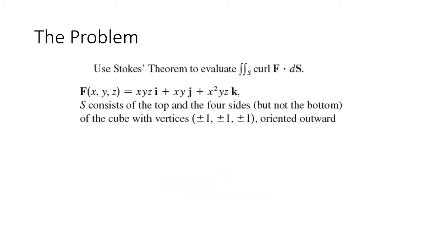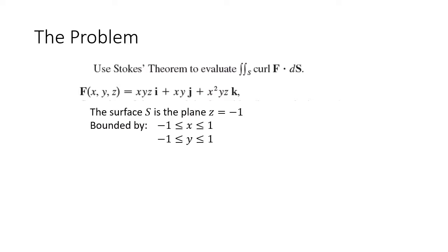So we started with Stokes' Theorem. We have Stokes' Theorem to evaluate that surface integral of the curl of F dot dS. We still have our vector field. But now, this problem that was originally given as S consisting of the top and the four sides of this cube is identical to the surface S being the plane z equals negative one, bounded by negative one ≤ x ≤ one and negative one ≤ y ≤ one. That is going to be a much, much easier surface integral to compute — and that is the genius of Stokes'.